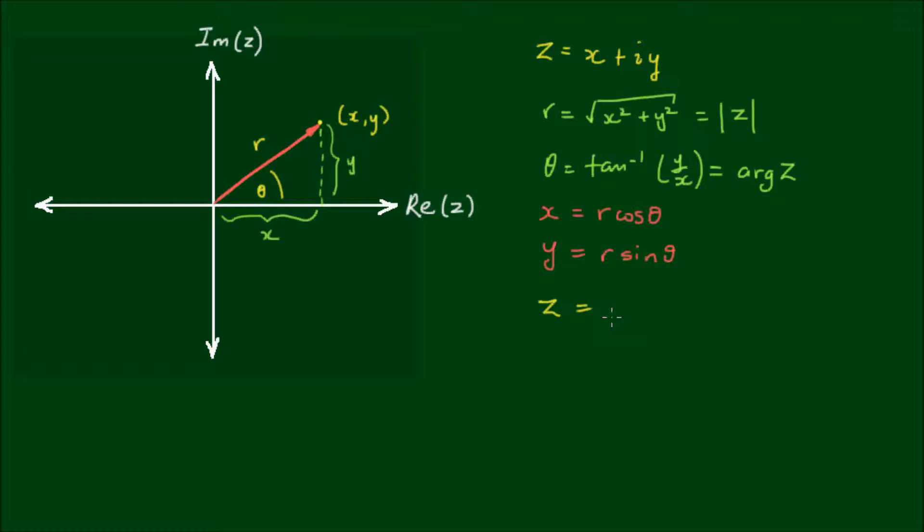So z, the complex number, can be rewritten as z is equal to r cos θ plus i times r sin θ. And here I can factor out an r. So I get r outside of cos θ plus i sin θ.